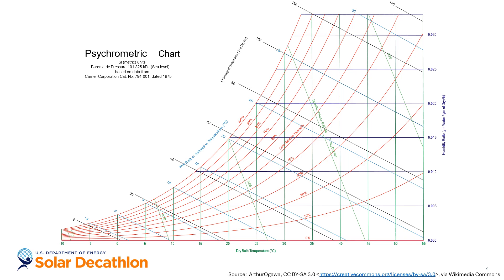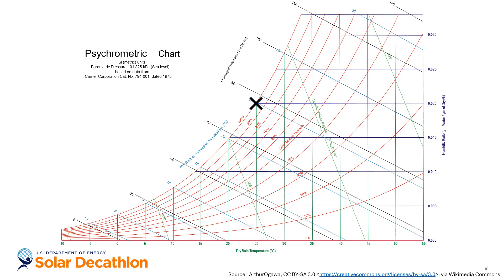One thing you might notice right away is that the chart seems to be missing the upper left portion — it's cut off on a curved edge. This edge is known as the saturation line. At a given temperature, air can only hold a certain amount of moisture before it becomes fully saturated and water vapor condenses into liquid water. If we look at a dry bulb temperature of 25°C and follow that line up to the saturation curve, we see the 25° dry bulb and wet bulb lines intersect at this point. Being at the saturation curve means the air cannot hold any more water vapor — it's holding 100% of what it possibly can. This is known as the relative humidity of the air, depicted by curved red lines.